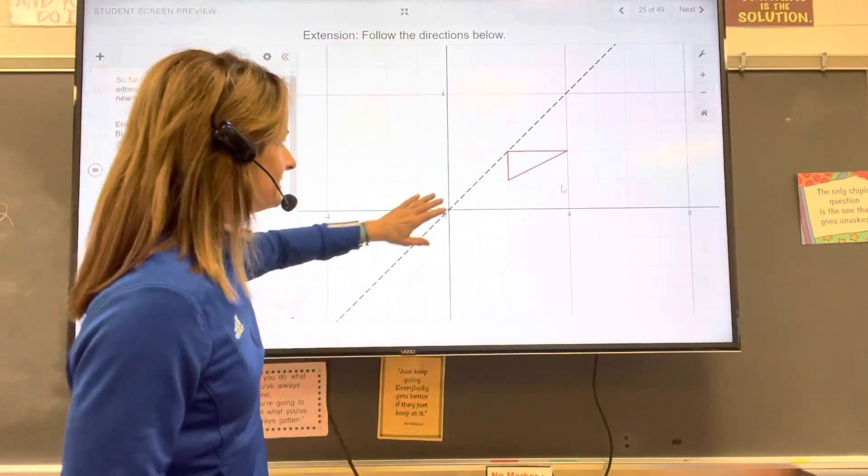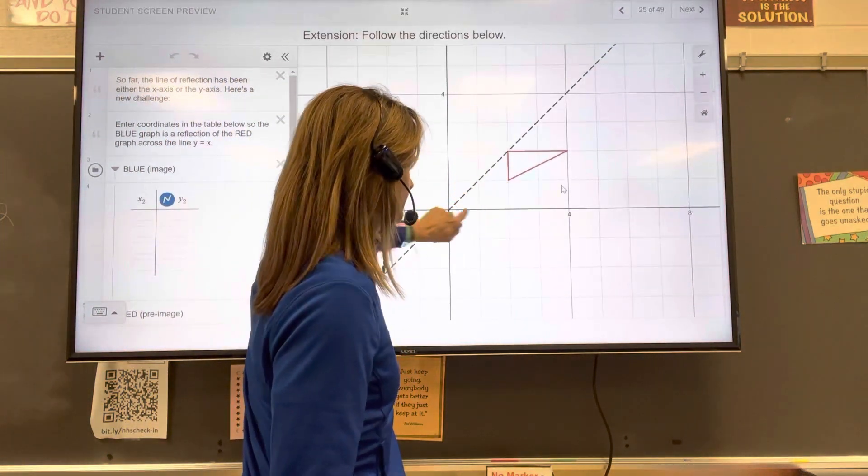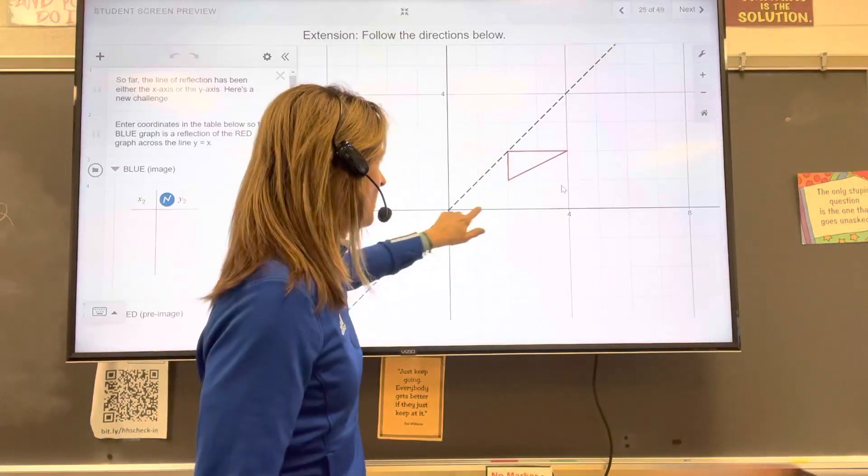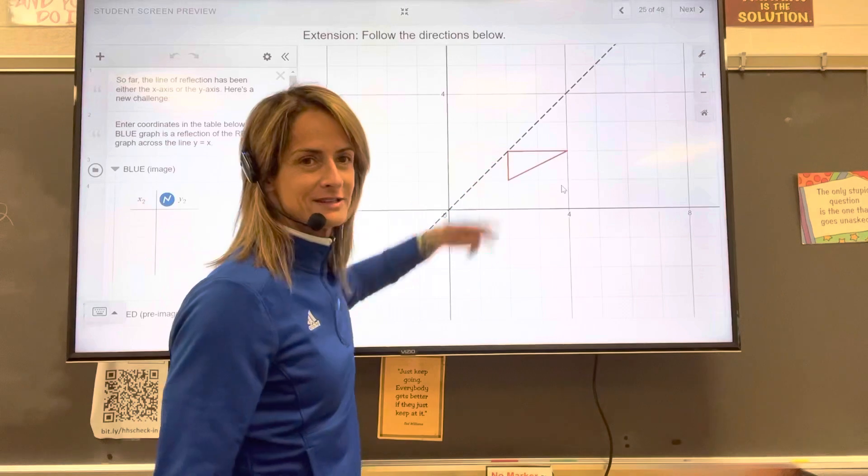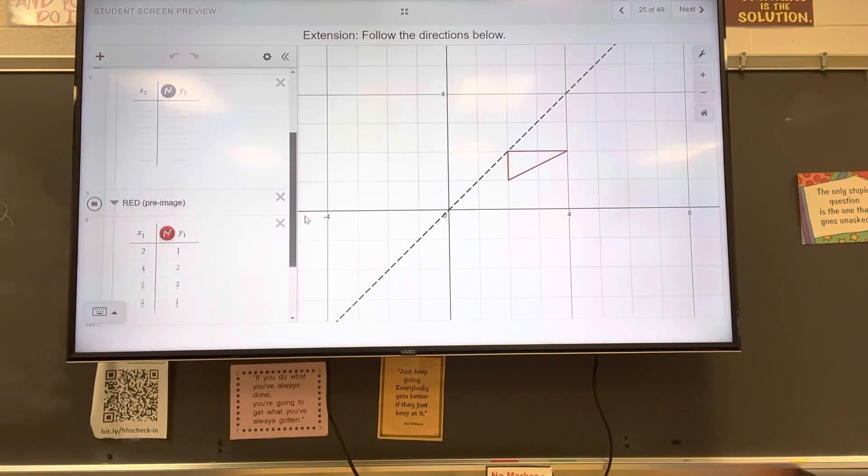What you'll notice is that when you have a reflection, this point here, for example, is at 2, 1. If you flip those coordinates to 1, 2, it's reflected over this line, y equals x. So it's all the same coordinates. They're just the x and the y coordinates have switched. So I am just going to take all these coordinates and switch the x and the y.